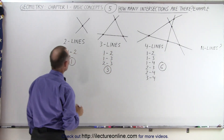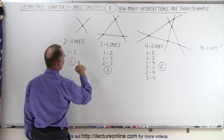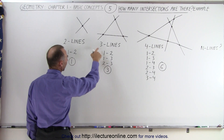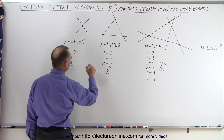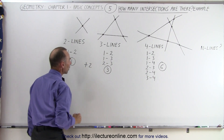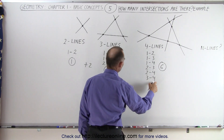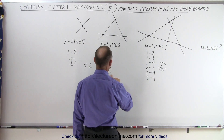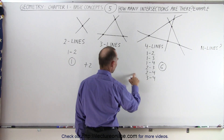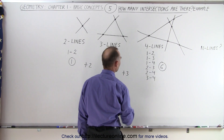Notice that with two lines you have one intersection, with three lines you have three — so you add two. With four lines you have six — so from three to six, that means you add three.